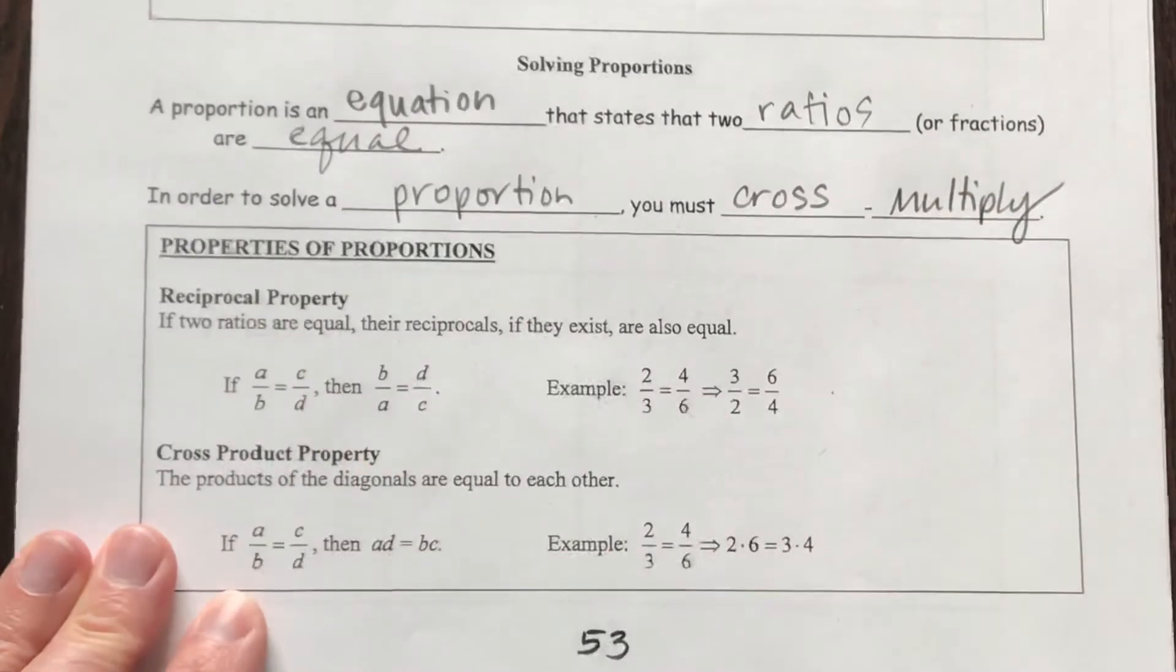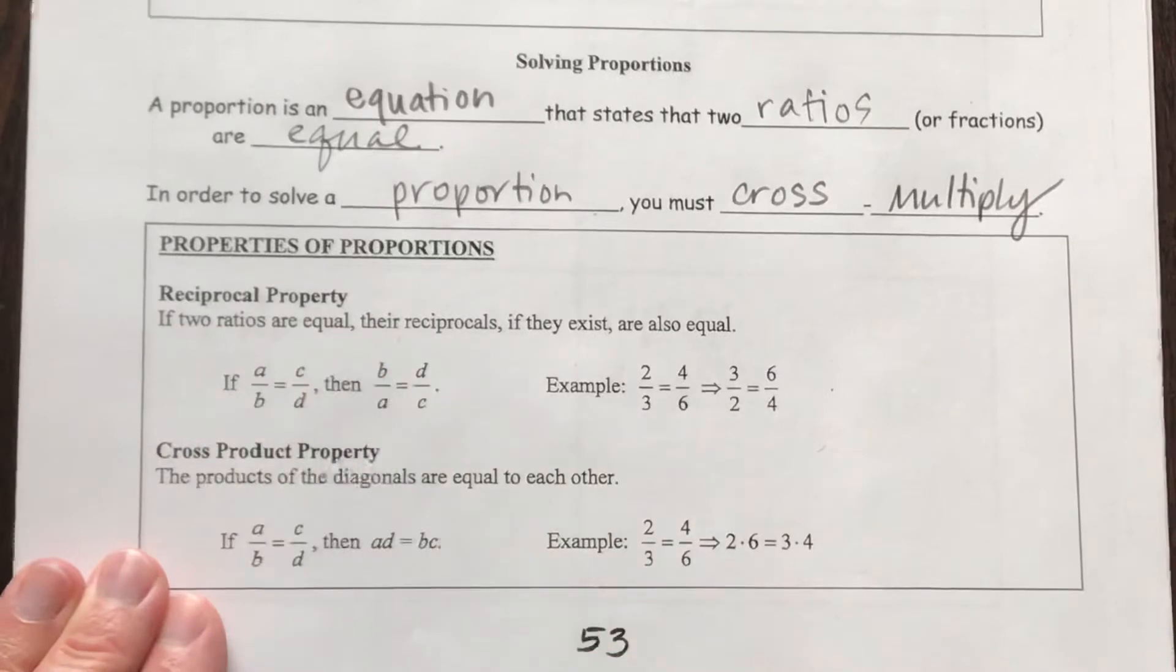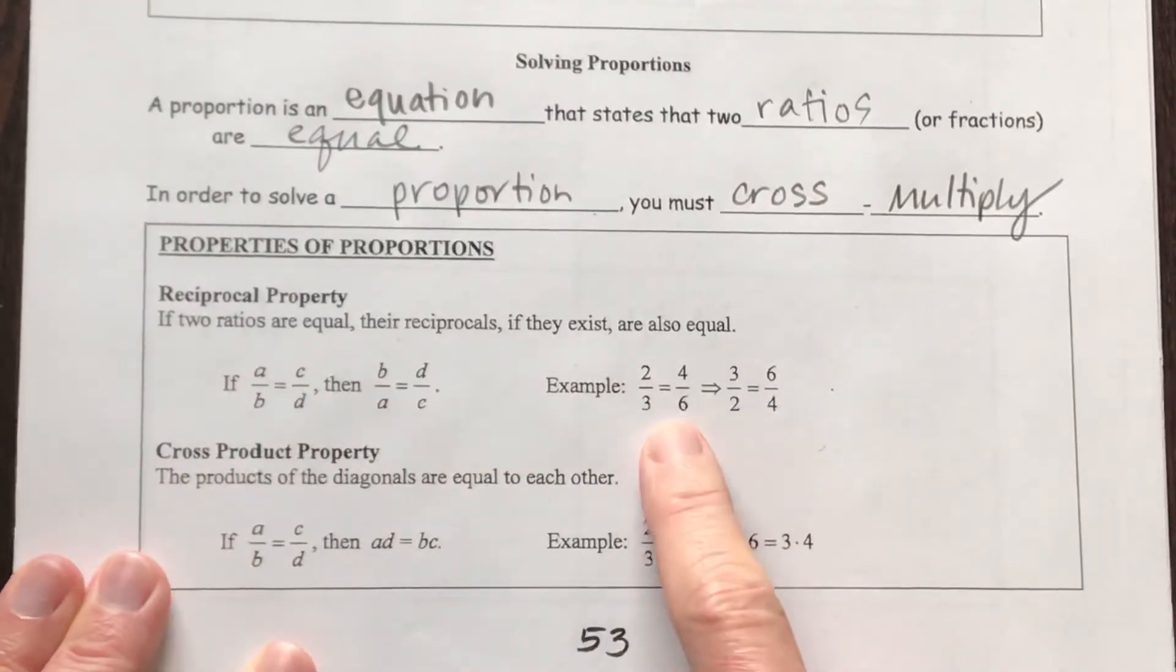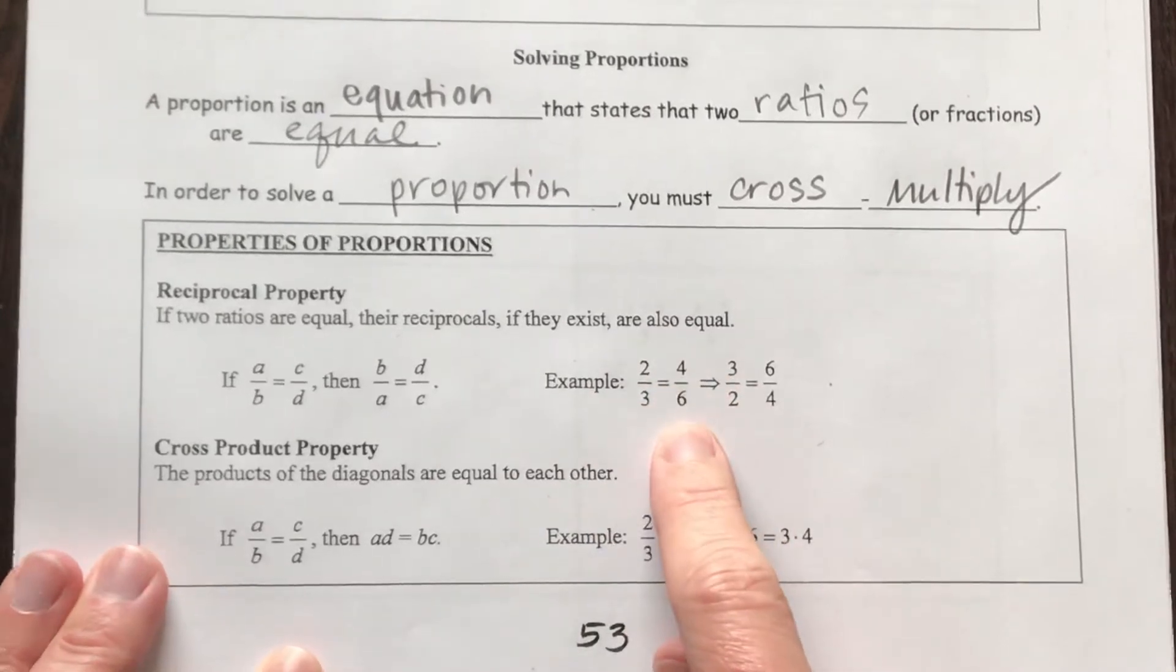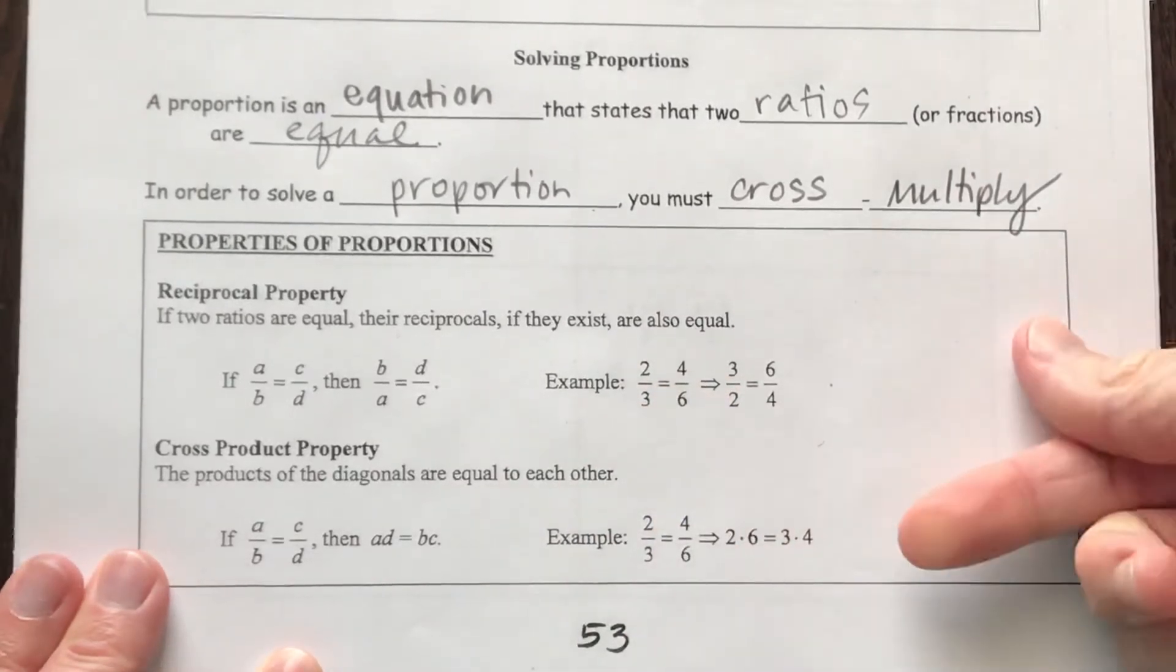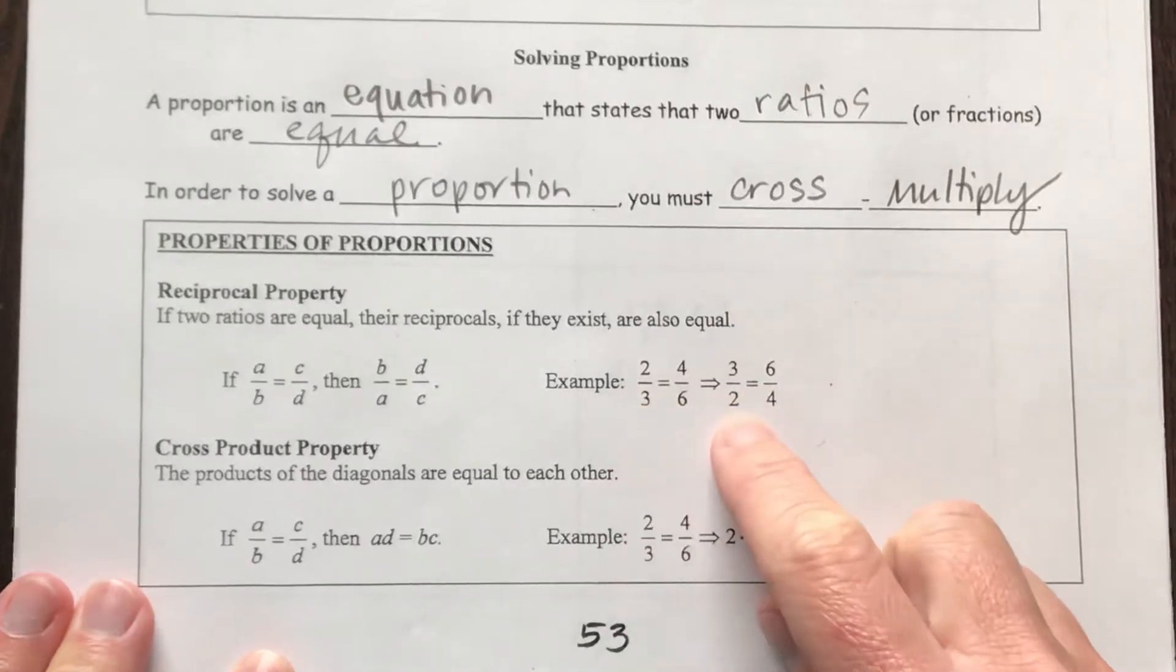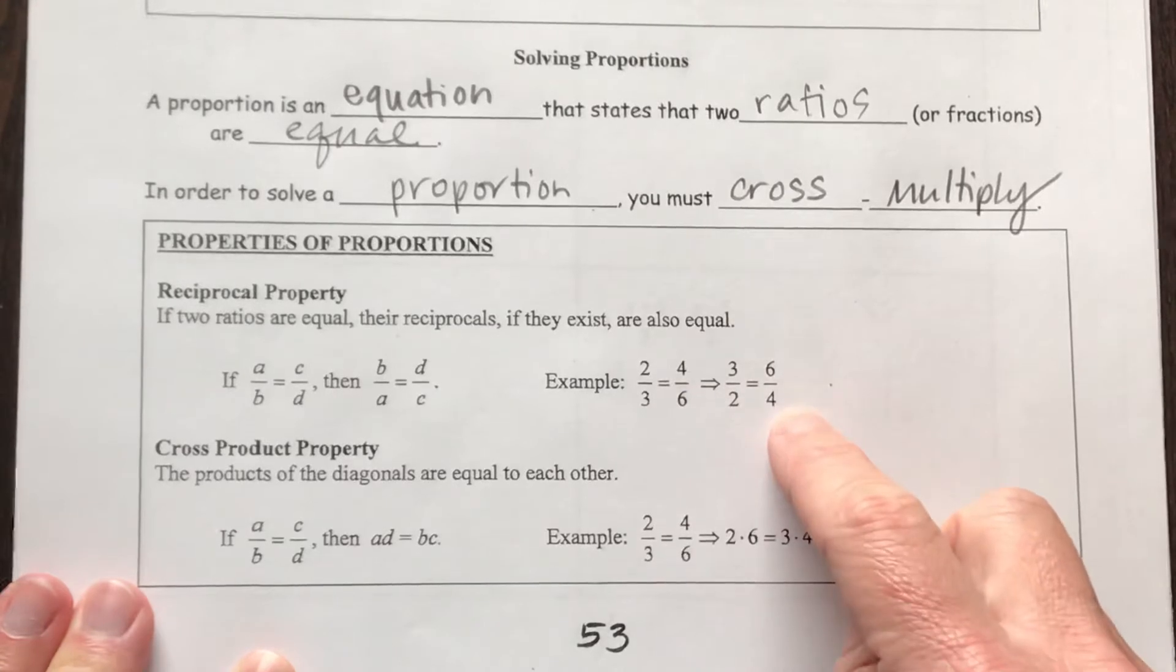Here's the property of proportions. It says reciprocal property. If two ratios are equal, then their reciprocals, if they exist, are also equal. Notice how in this example with letters, but here with numbers, two to three is equal to four to six. It's the same if you flipped both of those fractions upside down. So three to two, notice that got flipped upside down. And then again, your four to six got flipped to six over four.